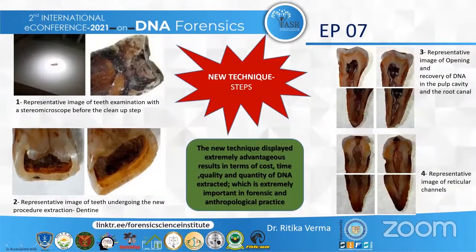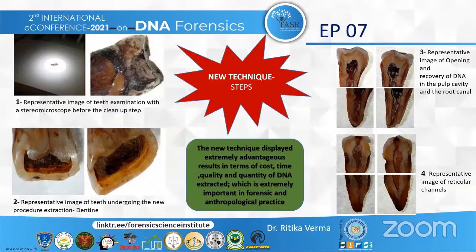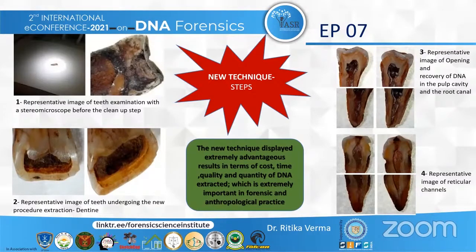In the new procedure, each tooth was observed under a Nikon stereomicroscope to determine the least damaged part of the tooth — the first image is a representative image of this examination before any procedure. In the apico-coronal axis, a 1 mm deep and 1 mm wide furrow was cut with a carborundum disc using a sterile handpiece and a surgical micromotor. Figure two shows the tooth undergoing the new extraction procedure, revealing the dentine. Afterwards, the teeth were opened with a bibevel chisel and med mallet with nylon ends, exposing the pulp cavity along with part of the root canal. The third image shows the opening and recovery of DNA from the pulp cavity and root canal, and the fourth shows the pulp removed with reticular channels visible.